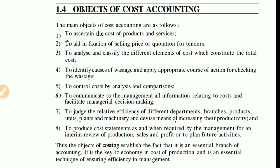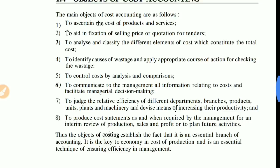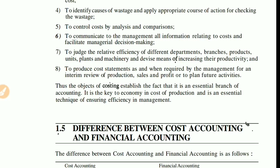These were the total eight objectives of cost accounting. The objectives establish the fact that cost accounting is an essential branch of accounting. Accounting has three main branches: financial accounting, cost accounting, and management accounting. Cost accounting is a key to the cost of production — if you want to reduce the cost of production, cost accounting is essential. It is an essential technique for ensuring efficiency in management.